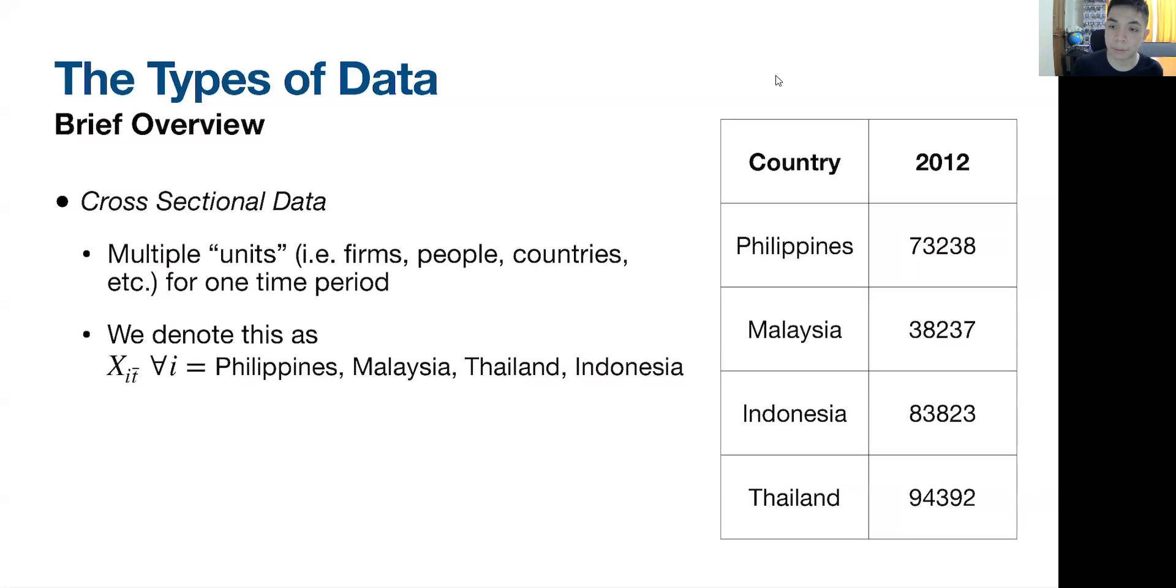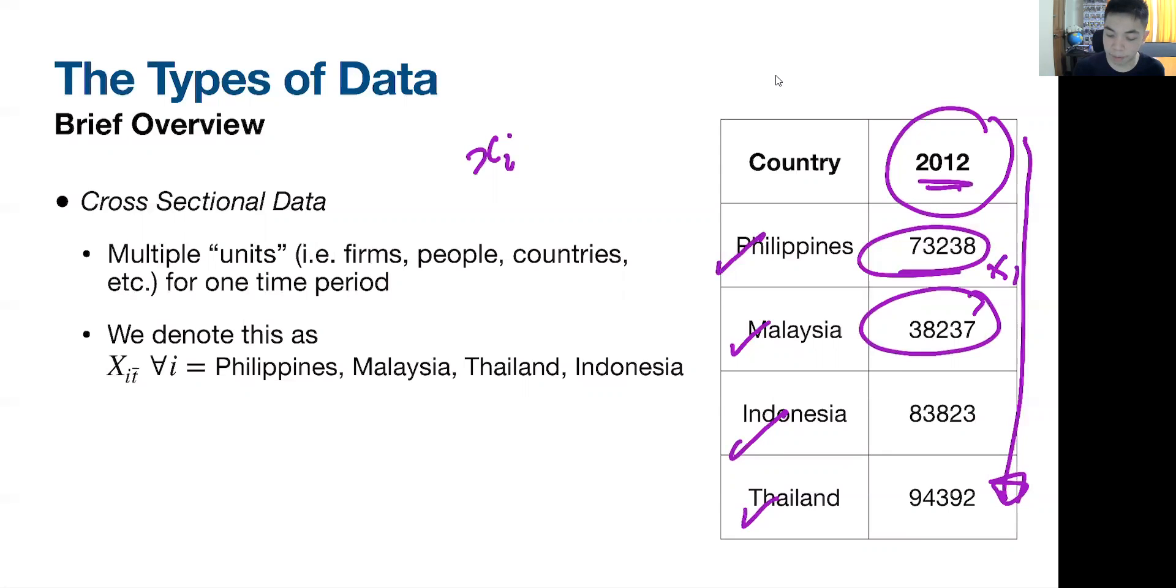For example, in the data set that we have to the right, we have multiple countries: Philippines, Malaysia, Indonesia, and Thailand, but we only have them for one time period, 2012, and they have values for each of those. For a cross-sectional data set, we effectively call each observation x sub i, a specific variable x sub i, wherein the variable varies in value across observations. Philippines has this entry, x1. For the same year, Malaysia has a different value, that's x2, this is x3, x4, and so on.